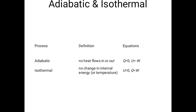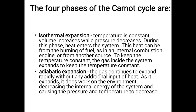The four main steps of the Carnot cycle are as follows. Step one: isothermal expansion — temperature is constant, volume increases, and pressure decreases. During this phase, heat enters the system, which can come from burning fuel or a hot reservoir such as an internal combustion engine. The gas inside expands to keep the temperature constant. Step two: adiabatic expansion — the gas continues to expand with no heat input, does work on the environment, and the internal energy decreases, causing both pressure and temperature to fall.